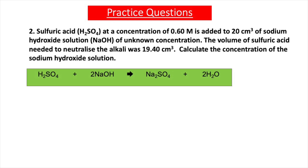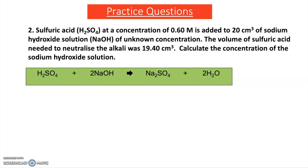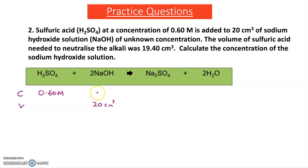Now have a go at our second practice question — read through, pause the video, have a go, and then we'll go through the answer. In practice question two, sulfuric acid reacts with sodium hydroxide to form sodium sulfate and water. The concentration of sulfuric acid is 0.60 mol dm⁻³, the volume of sodium hydroxide is 20 cm³, and the volume of sulfuric acid needed to neutralise the alkali was 19.40 cm³. We need to find the concentration of sodium hydroxide.